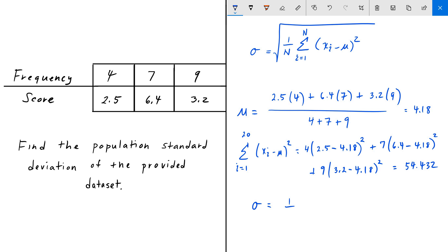Our standard deviation is 1 over n, which is 1 over 20, times the sum we've already calculated, which is 54.432, and then we take the square root of that. When we do that we get 1.65, and that is our answer.